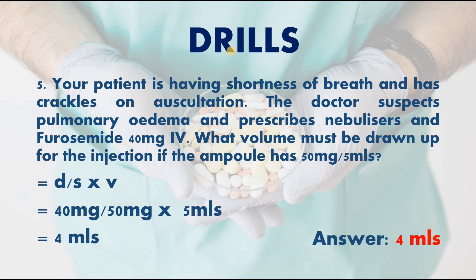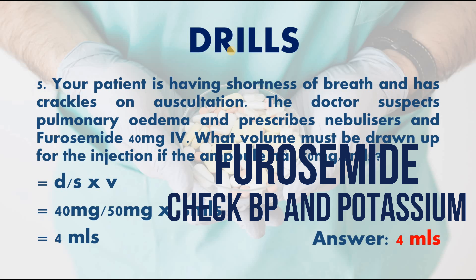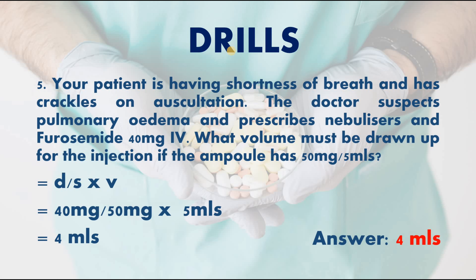Nursing consideration for furosemide: check blood pressure and potassium levels prior to giving it. As a loop diuretic, it causes the patient to pass more urine, losing fluid and potentially lowering blood pressure. It also causes potassium loss through diuresis, so potassium levels must be monitored and replaced if low.